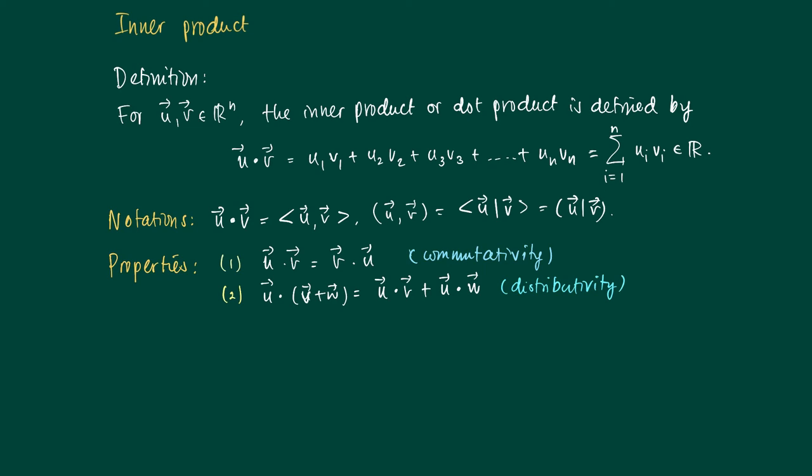Third property deals with scalars. So if we take the scaled version, we have c times u, we take the inner product with w, then we can take this constant out, the scalar. It's no more than c times the dot product of u with w.